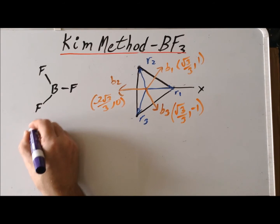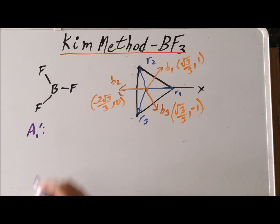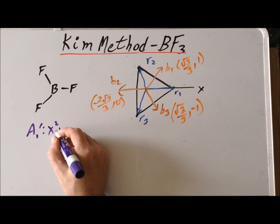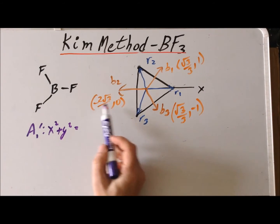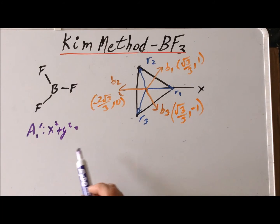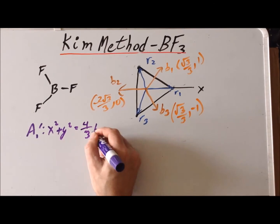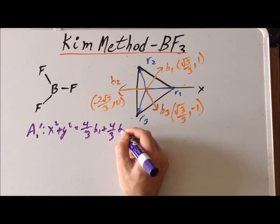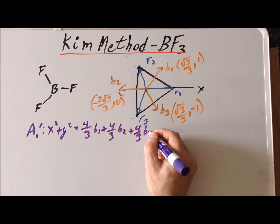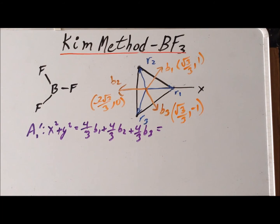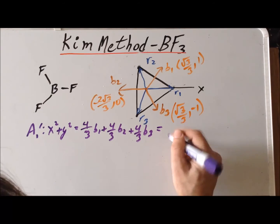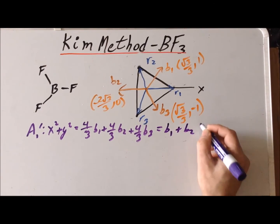Our first bending motion is again going to be an A1 prime. We recall that the basis function in this point group is x squared plus y squared. So taking the y value of B2 being 0, y squared is 0, and the x value is minus 2 times the square root of 3 over 3, which squared gives us 4 thirds. We get the same coefficient for B1 and B3 also. Multiplying through by 3 quarters gives us coefficients of 1 for B1, B2, and B3.